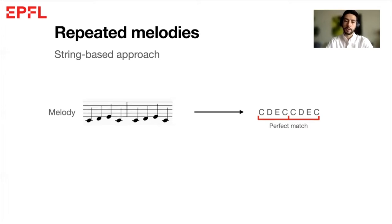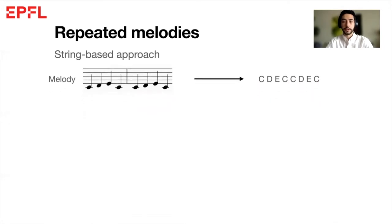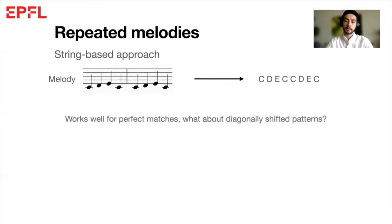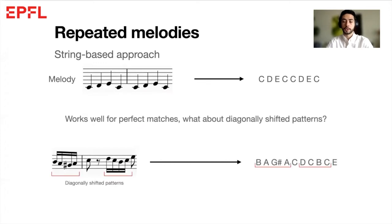However, when it comes to diagonally shifted patterns, just like the first motif in Ronde à la Turca from Mozart, it doesn't work.